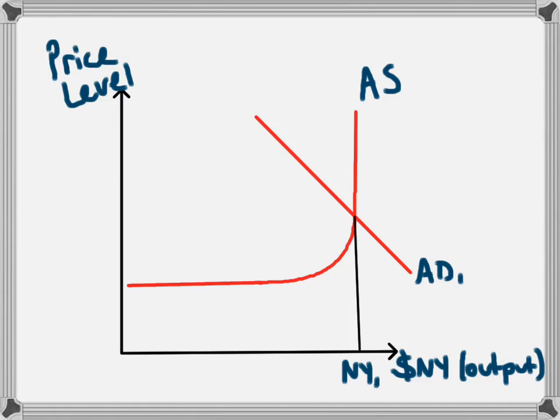We've employed all of the resources of the economy, so this is the full employment level of national income. A classical view of economics would say that if a government was to intervene to increase aggregate demand, it wouldn't have an impact on output — it would just have an impact on the price level.